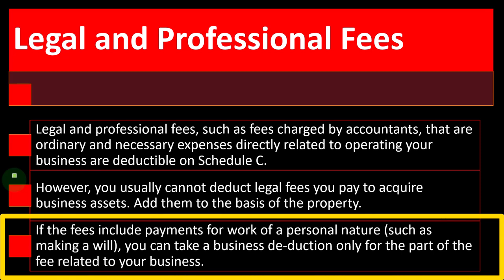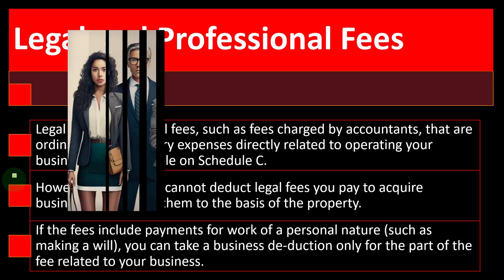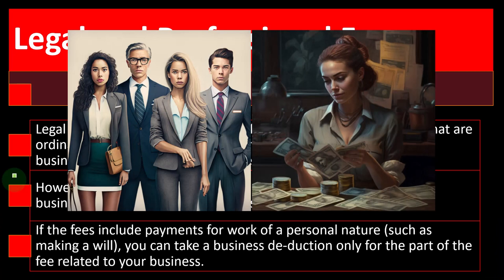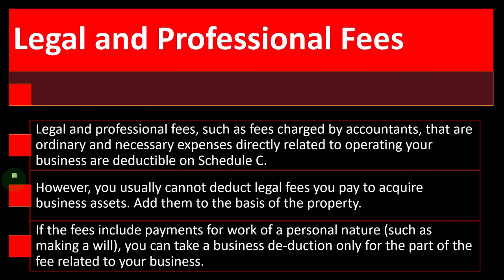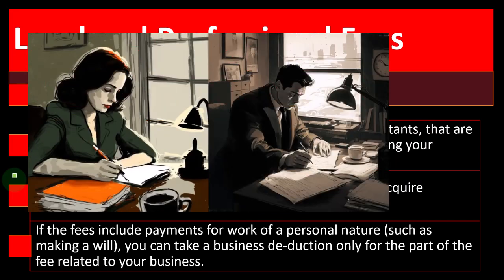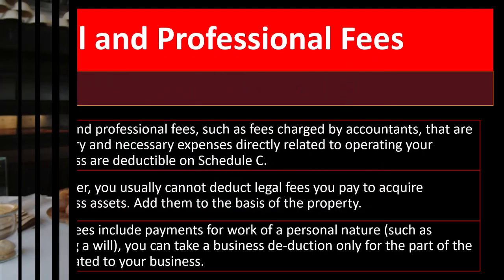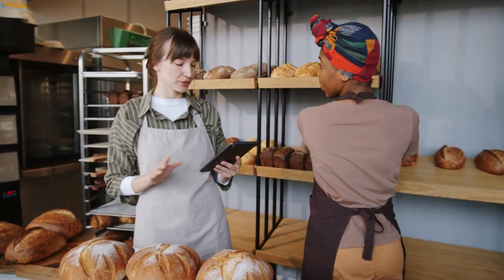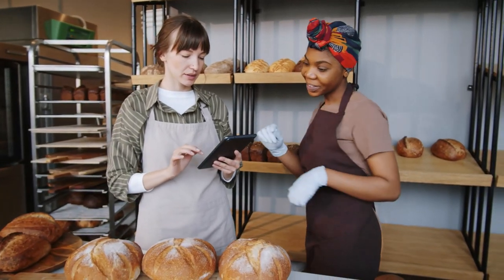If the fees include payments for work of a personal nature — such as making a will — you can take a business deduction only for the part of the fee related to your business. So if you're paying for something that might have some link to your business, you once again have something that is both personal and business. That's often where the fuzzy problem areas come in: you have something you can't neatly split between business and personal, and you typically have to find some method to break out the business versus personal portion in order to deduct the ordinary and necessary business part.